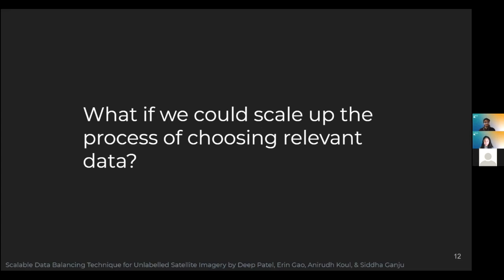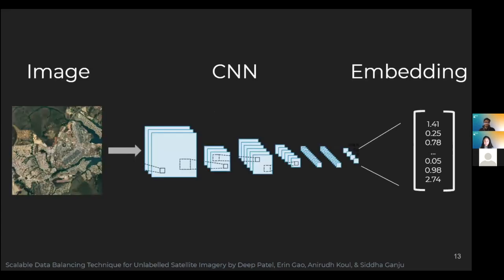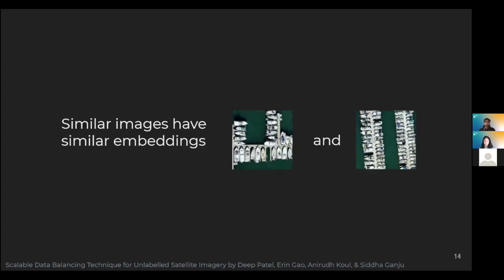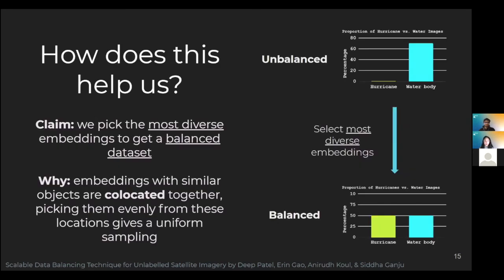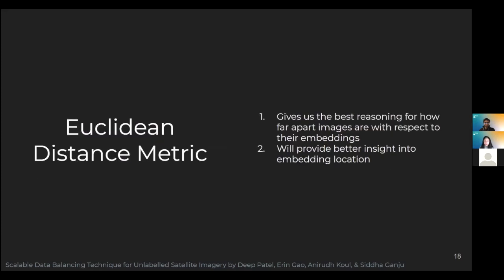Instead of balancing a dataset using labels, we choose to do it with embeddings. Here's a quick refresher on embeddings, which will help you understand the methods we use. Basically, passing a data point through a convolutional neural network converts it to a multidimensional vector called an embedding. The most important property is that the embeddings of similar objects are co-located together, while dissimilar images are relatively further from each other in this multidimensional space. If we have an unbalanced dataset, we can choose the most diverse embeddings and, as a result, get a more balanced dataset. By picking images evenly from these locations, we can get a balanced sampling of the dataset. To measure the distance between embeddings, we use the Euclidean metric because it is fast to compute and provides good insight into the location of embeddings.